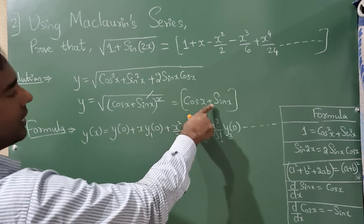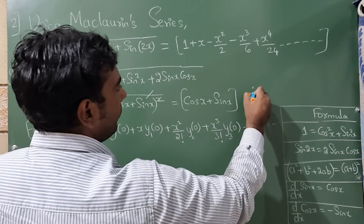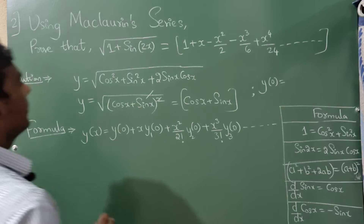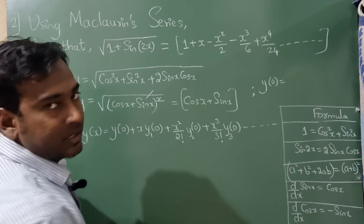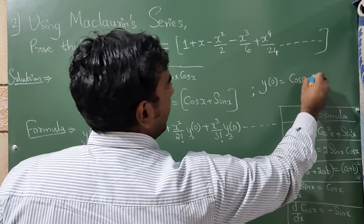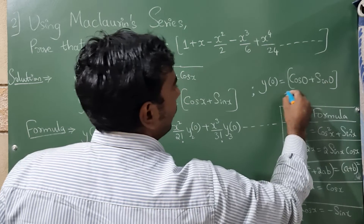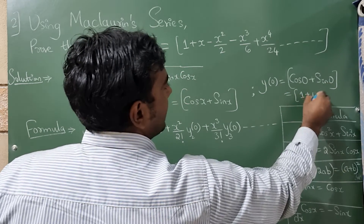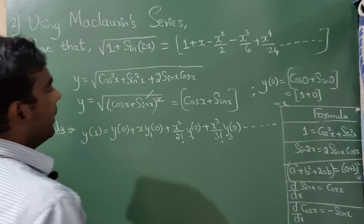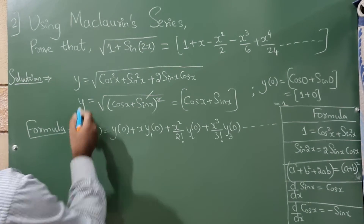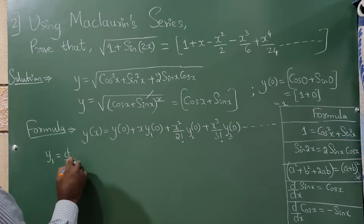Since y = cos x + sin x, we substitute x = 0 to find y(0): cos(0) + sin(0) = 1 + 0 = 1.